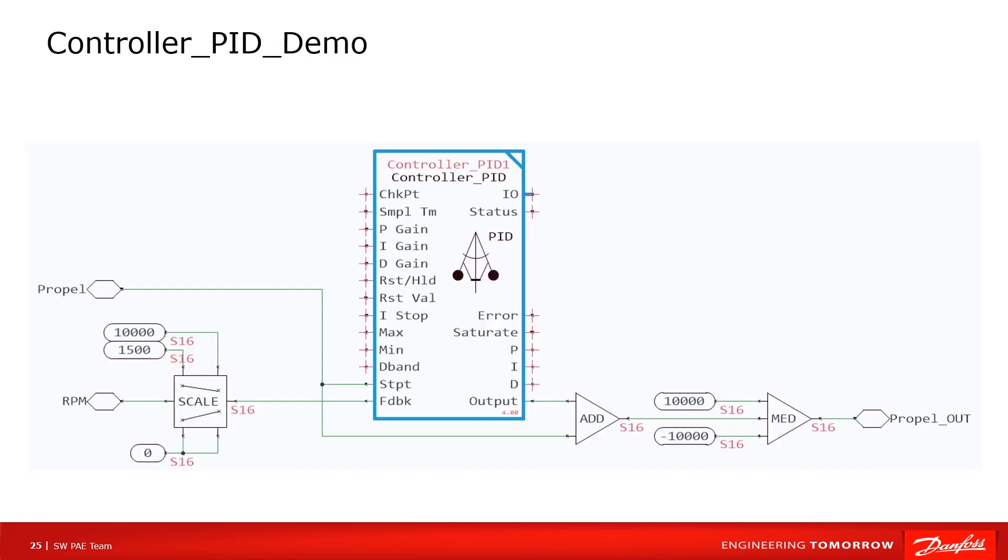Here is a simple example of PID controller showing how to use it in a program. Setpoint connects to our reference command. Feedback connects to signal from speed sensor. Remember to convert setpoint and feedback to have the same unit. Then add PID output to setpoint and limit it.